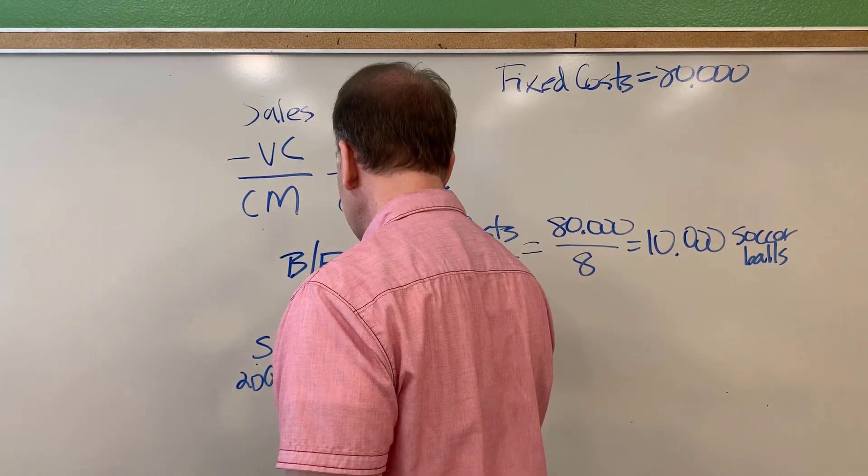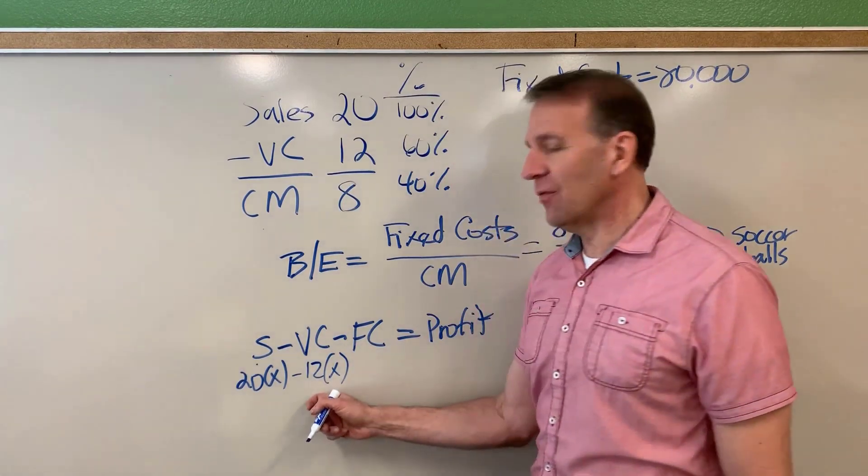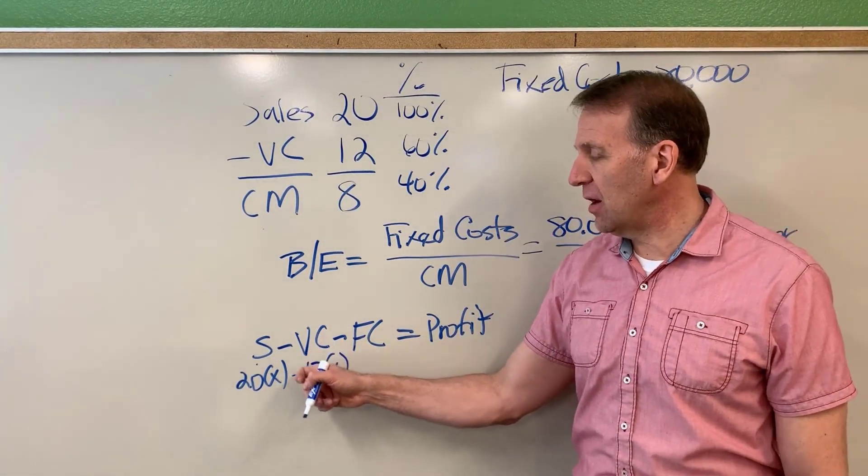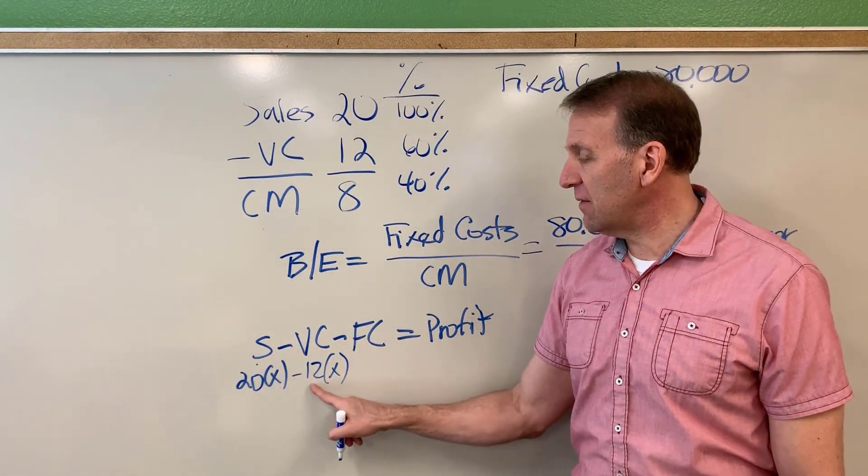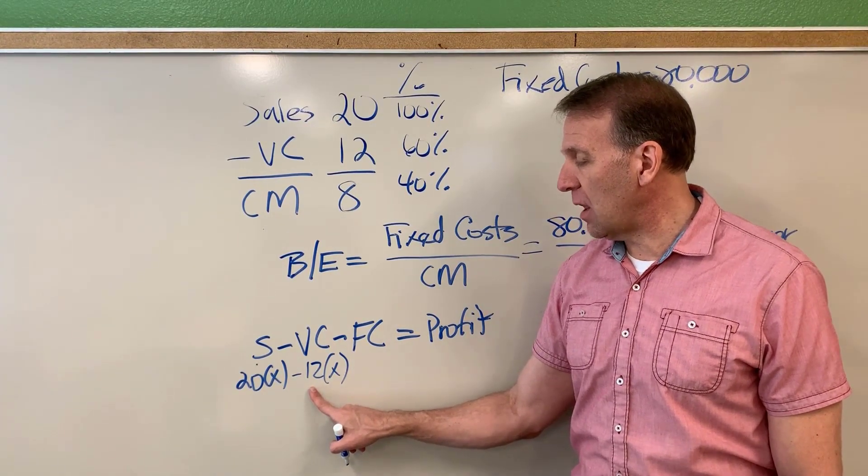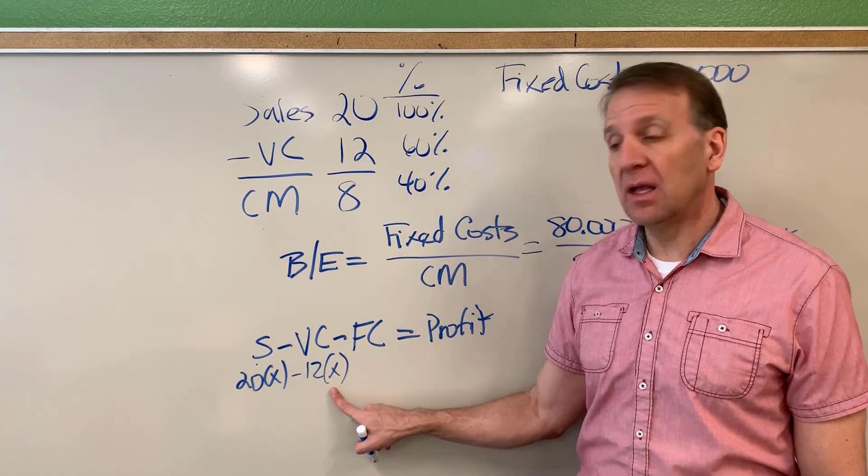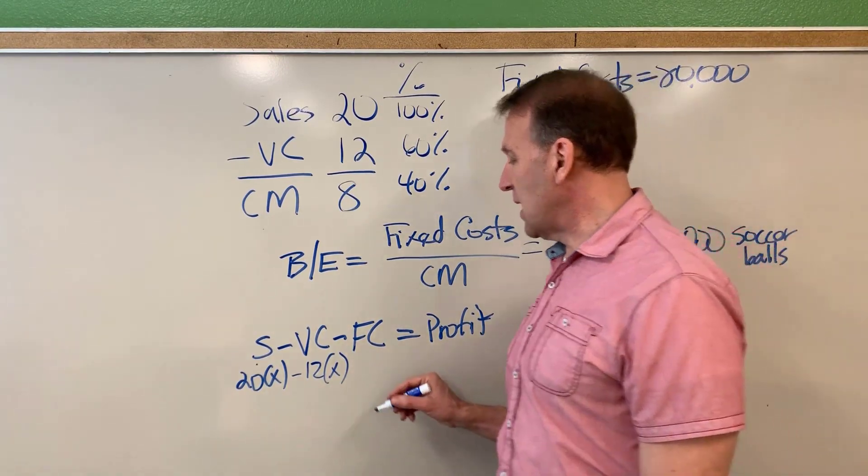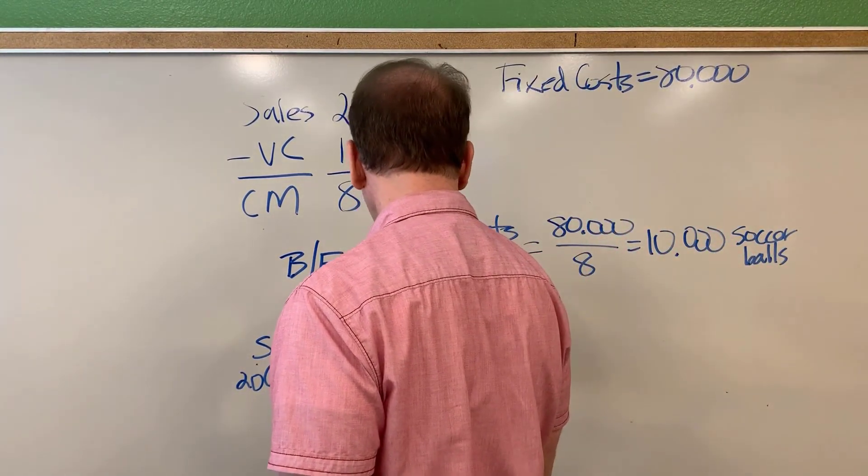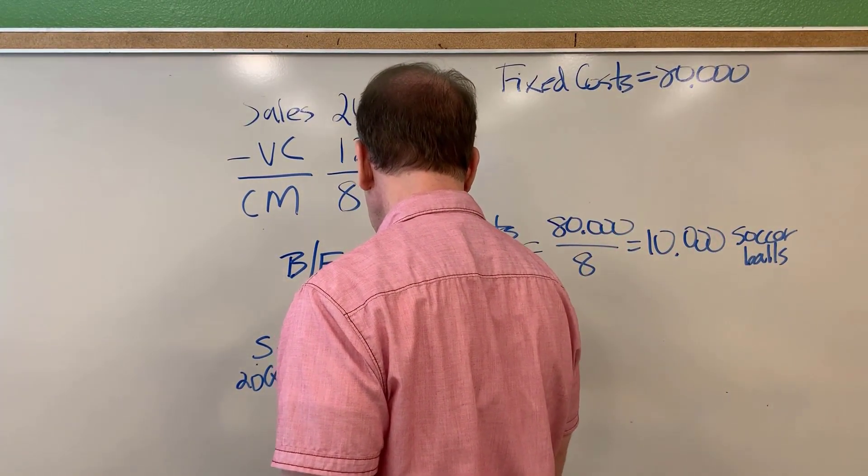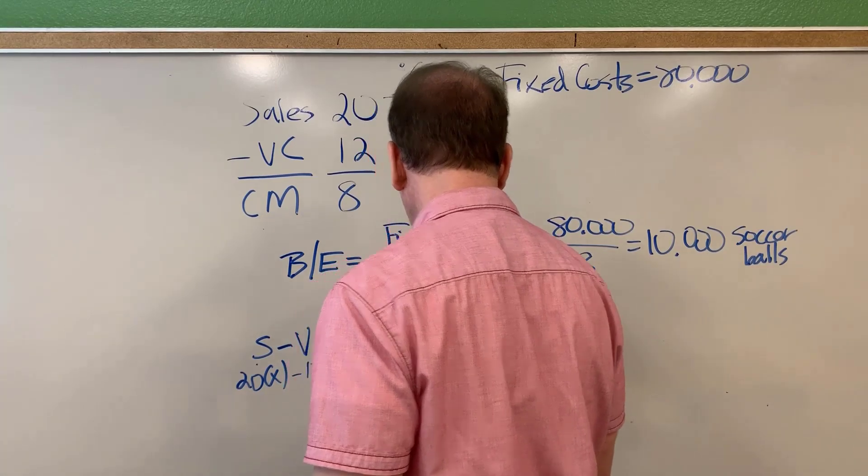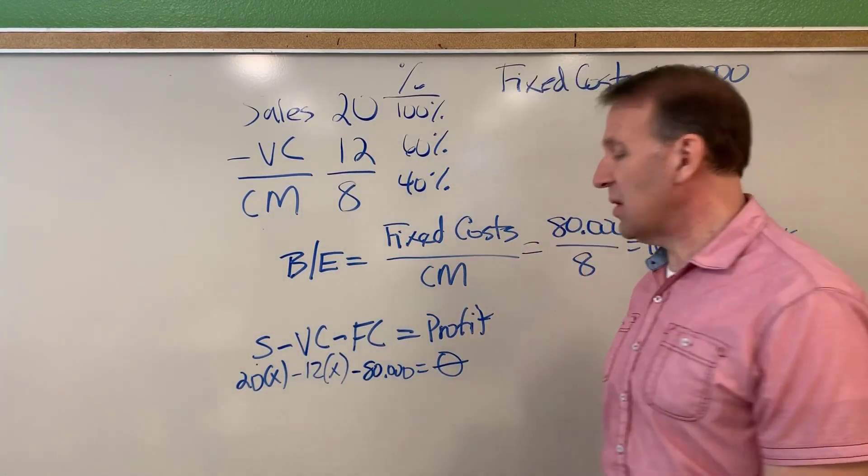Our variable costs are 12. But once again, we don't know the total variable cost because that's what we're trying to get. So for the variable cost, we need to multiply the 12 by the number that we would sell in order to have a certain profit. Our fixed costs are $80,000. And our profit, well, this is break even, so our profit is zero.